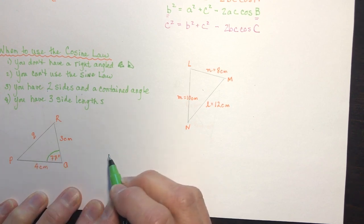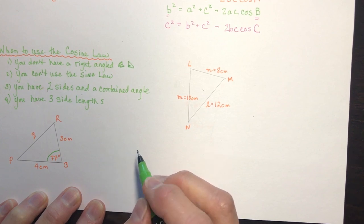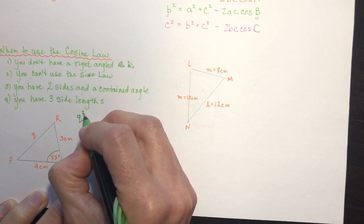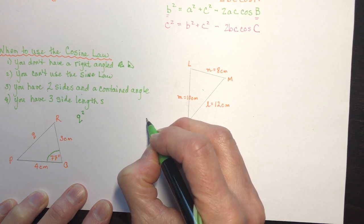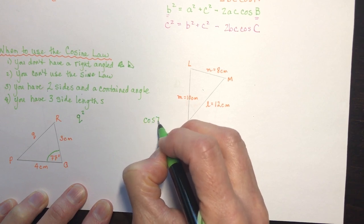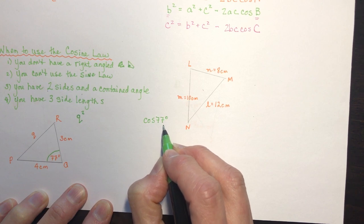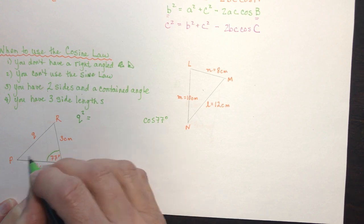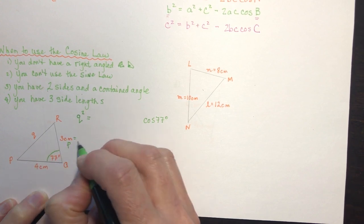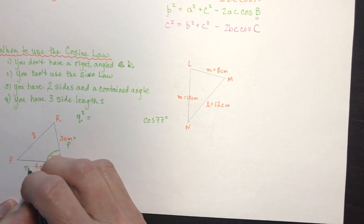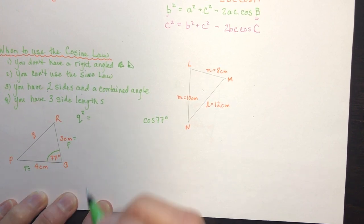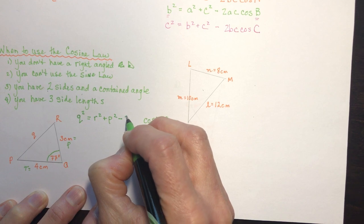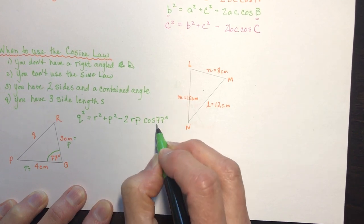I'm going to write out the cosine law — or the 'coleslaw' as my students like to call it. I'm going to use q because I have angle Q, which is 77 degrees. So q squared equals r squared plus p squared minus 2rp times cosine of Q.